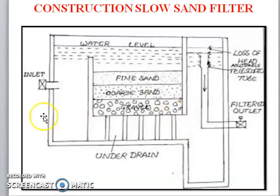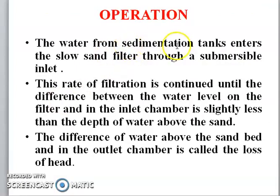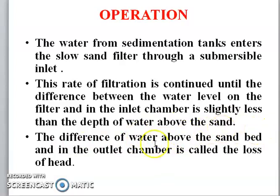This is the slow sand filter. It has an inlet, filter sand, fine aggregate, coarse aggregate — water passes through the aggregate layers and is filtered. This is the outlet. In operation, water from the sedimentation tank enters the slow sand filter through a submerged inlet. The rate of filtration continues until the difference between the water level on the filter and inlet chamber is slightly less than the depth of water above the sand. The difference between the water level above the sand bed and the outlet chamber is called loss of head.